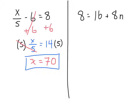To double-check, plug in 70 for x in the equation. 70 divided by 5 is 14, and 14 minus 6 is equal to 8. So x equals 70 is correct. Now pause the video and try the equation on the right: 8 is equal to 16 plus 8n. Unpause when you are ready to see how I solved it.